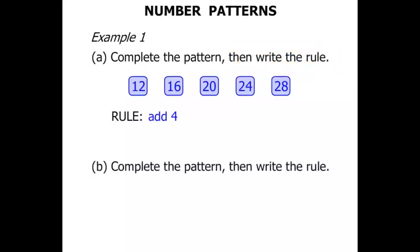The next one. Complete the pattern then write the rule again. So here we go: 84, 74, 64. Hmm, these numbers are going down. So once we work out what we've got to do, we're going to write the rule as well.